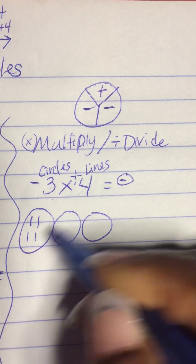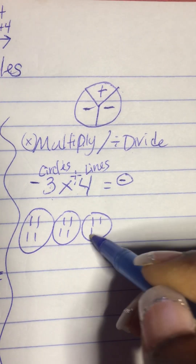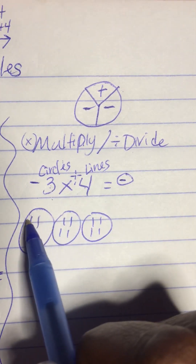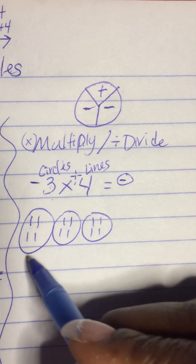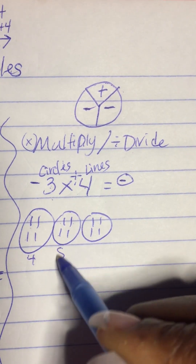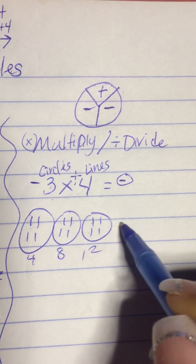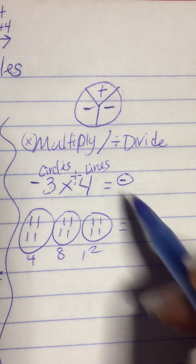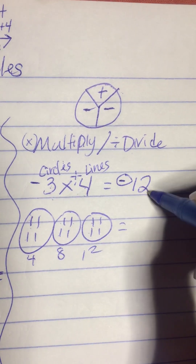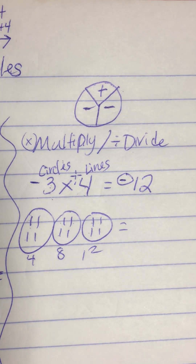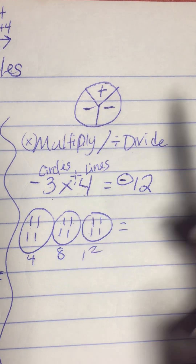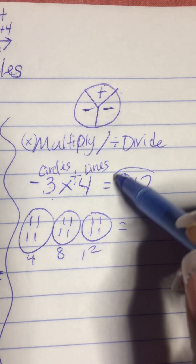Drawing four lines in each of the three circles — 1, 2, 3, 4 in each circle. Counting all the lines: 1 through 12. So 3 times 4 is 12.